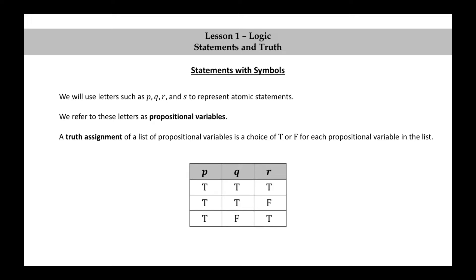A third example of a truth assignment would be to set P equal to T, Q equal to F, and R equal to T. Note that these are three different truth assignments. When we have three propositional variables, there are actually eight possible truth assignments. You may want to see if you could write down the other five.